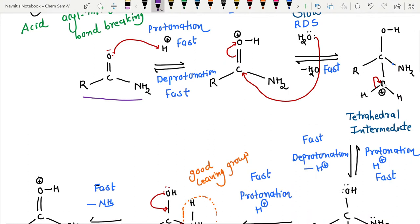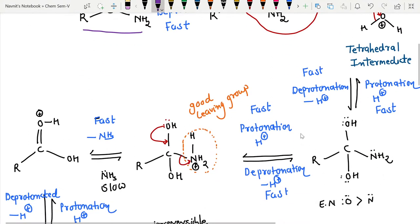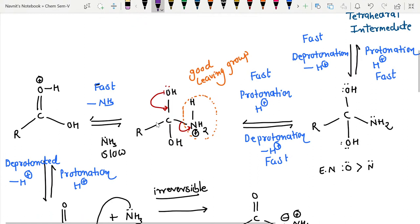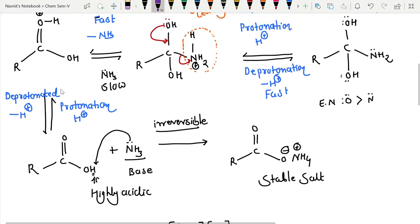Later on, a deprotonation reaction occurs, giving a tetrahedral species, which then undergoes a fast protonation reaction. This intermediate has the choice of whether oxygen gets protonated or nitrogen gets protonated. Due to the lower electronegativity of nitrogen, the lone pair on nitrogen is labile and highly reactive, so it gets protonated. The oxygen lone pair then pushes ammonia to leave from the molecule, giving a protonated acid. The final reaction is deprotonation, giving the acid and ammonia. Since ammonia is basic enough to abstract the highly acidic proton, it gives a stable ammonium salt.